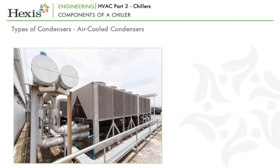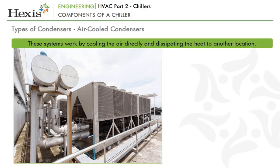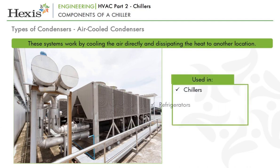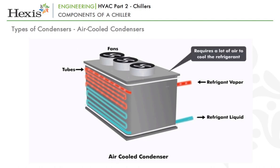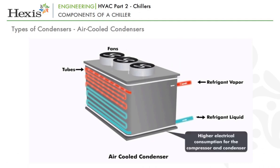Air-cooled condensers work by cooling the refrigerant directly and dissipating the heat to another location. They are widely used in chillers, refrigerators and air conditioning systems. The refrigerant passes through tubes attached with fins and is directly cooled by the air passing over the tubes, directed by a fan. Air-cooled condensers require a lot of air to cool the refrigerant and still do not lower the temperature to the levels achieved by water cooling. As a result, the electrical consumption goes up for the compressor as well as the condenser.